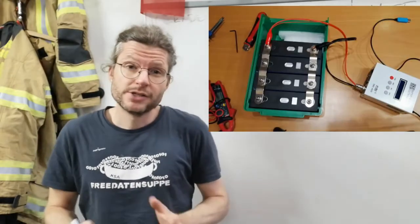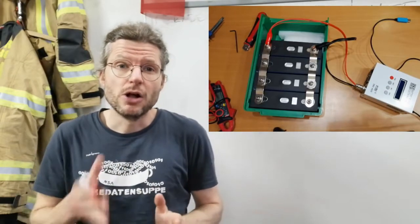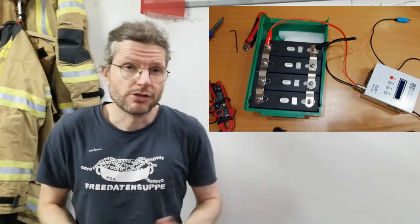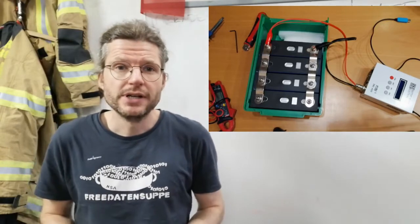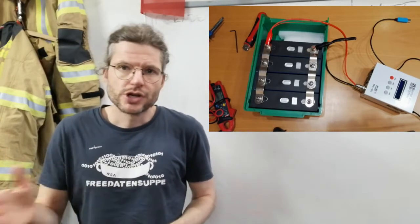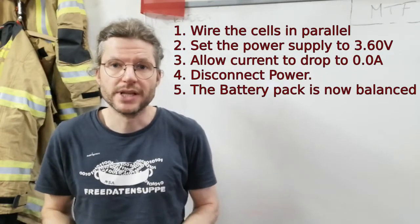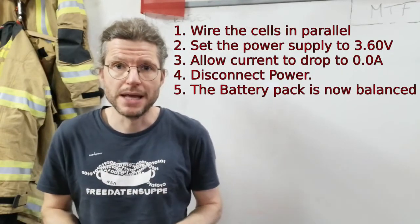Top balancing means you put everything into parallel, all the cells, you connect the charger at 3.65 volts or 3.6 volts, whatever, and you push current to the cells until there is no current flowing. Then they're really top balanced.